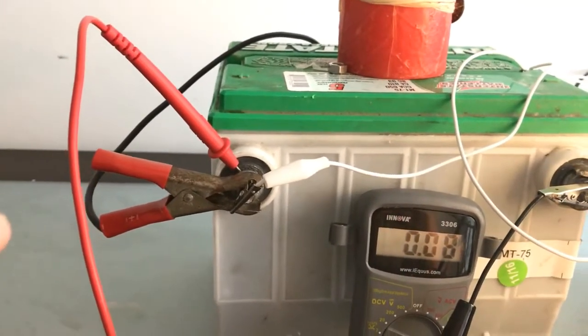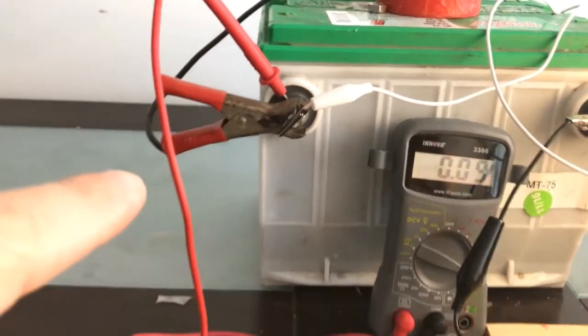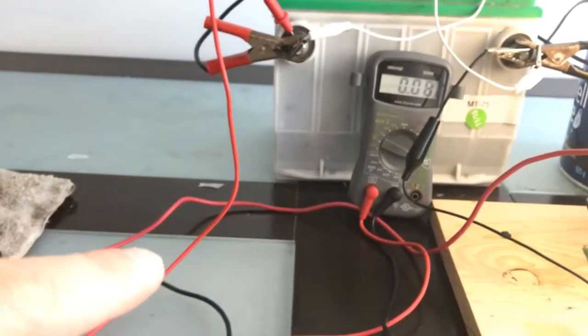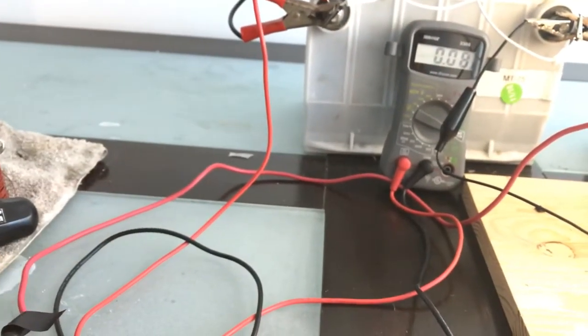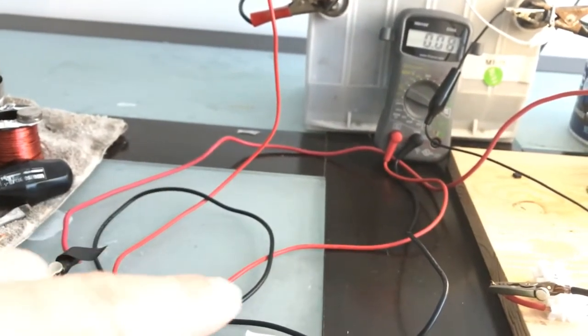So this is the power that we're using. The red meter wire goes from the battery into there, into the meter.